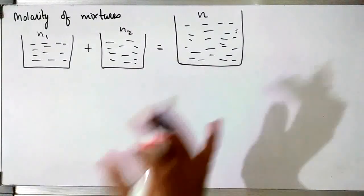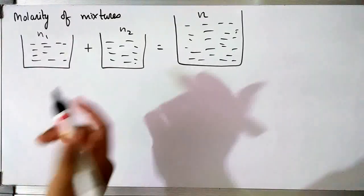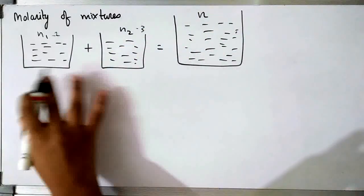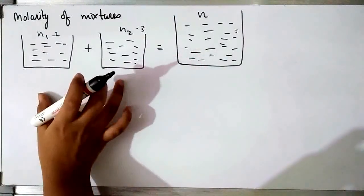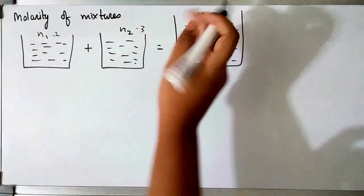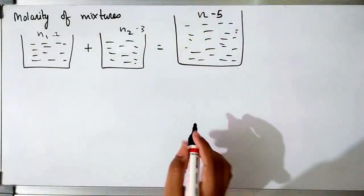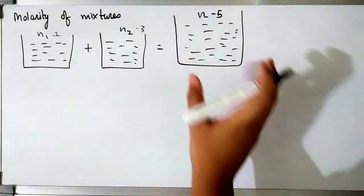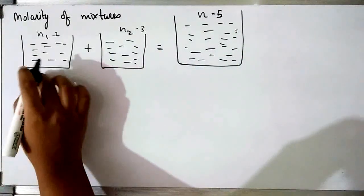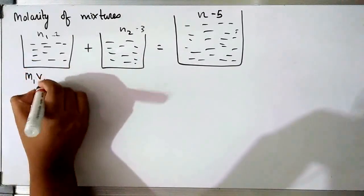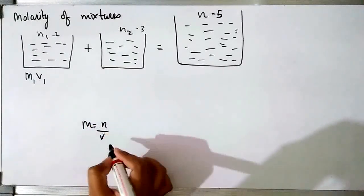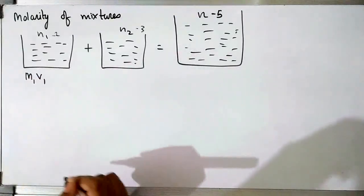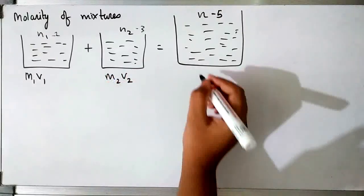Now we are going to talk about the molarity of mixtures. Suppose we have two containers: the first has 2 moles and the second has 3 moles. The third container is a mixture of these two. When you mix them, the number of moles adds up to give 5 moles in the third container. For each container, number of moles is M × V, so for the first it is M₁V₁ and for the second it is M₂V₂.